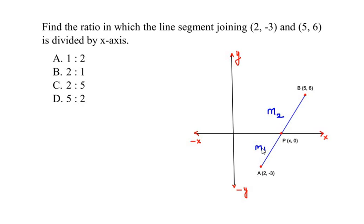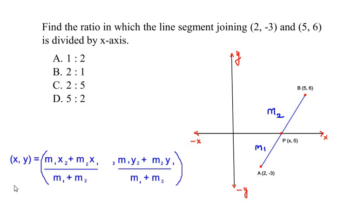Now since this is in the ratio form we are going to use the section formula which is given as (x, y) equals (m₁·x₂ + m₂·x₁)/(m₁ + m₂), (m₁·y₂ + m₂·y₁)/(m₁ + m₂).